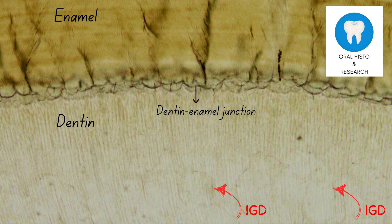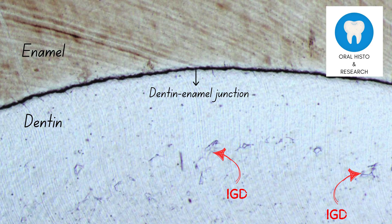Appearance-wise, the IGD appears as irregular small cracks in the dentin. In ground sections, it usually appears dark and black due to the reflection of transmitted light from these uncalcified areas. Also remember, due to lack of mineralization, caries can spread faster through areas having IGD.